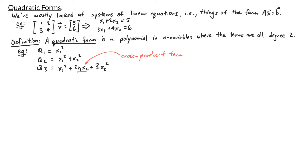Let's look at one more polynomial. Let q4 be the polynomial x1 squared plus x3 squared minus 5x1x2 plus 7x2x3. Here we have a quadratic form in three variables: x1, x2, and x3. The x1 squared and x3 squared are non-cross product terms, while minus 5x1x2 and plus 7x2x3 are both cross product terms.